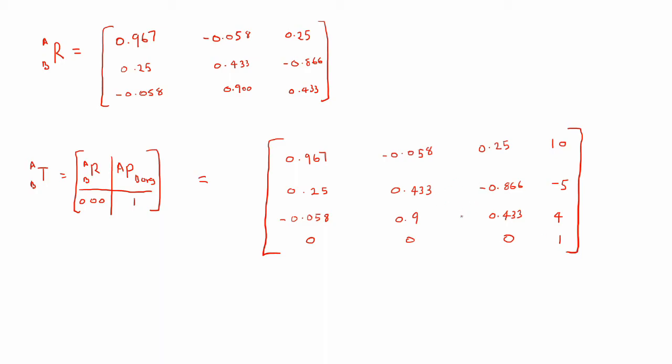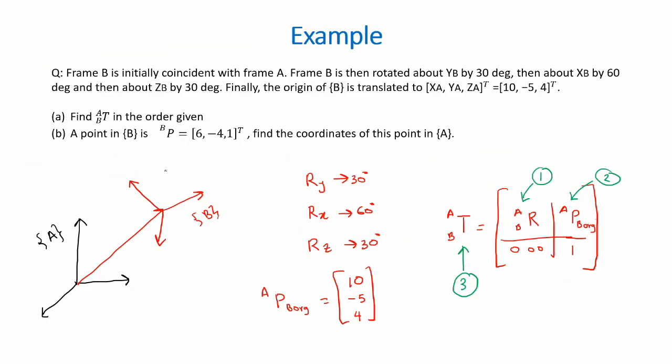So this 4 by 4 matrix is our transformation matrix TAB. Now we'll have a look at the second part of the question.